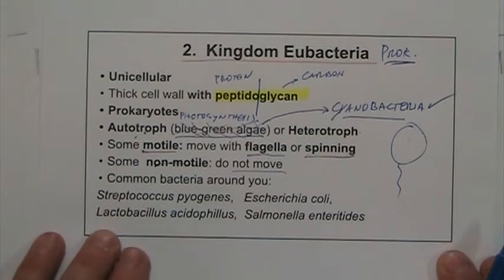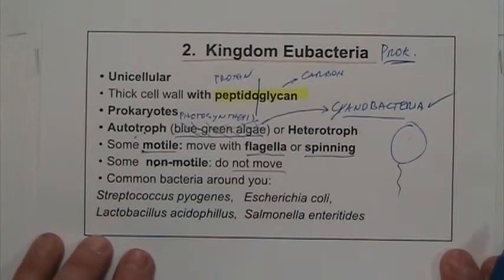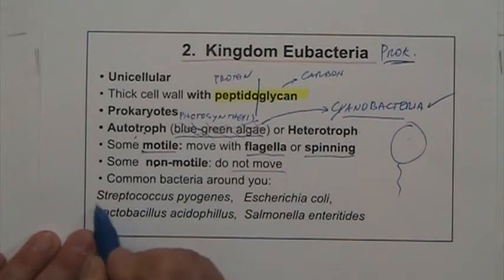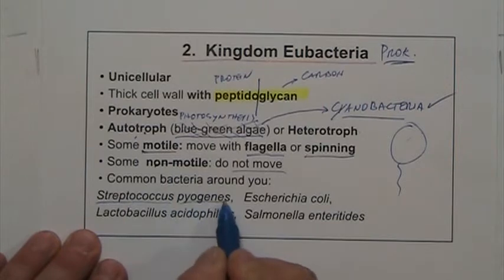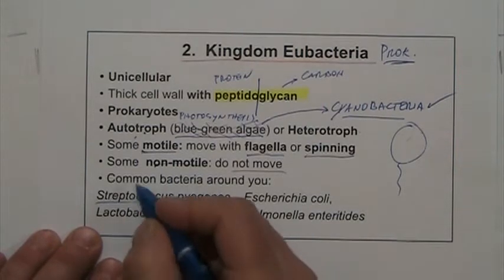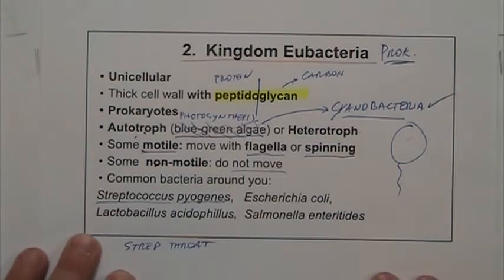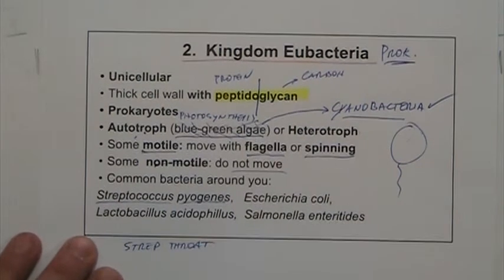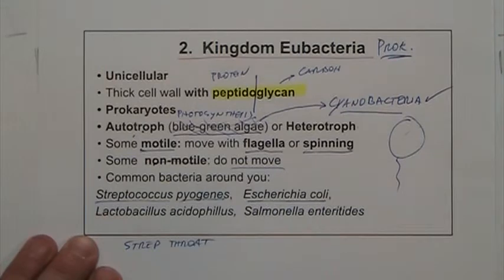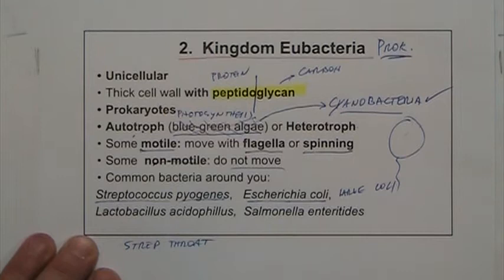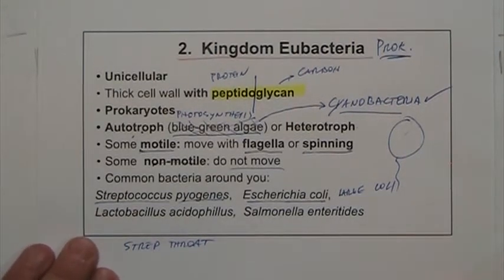Here are some examples of bacteria around us. Streptococcus pyogenes is the one that causes strep throat — very painful. E. coli lives in our large intestine and is very good for us, helping make molecules the body needs, like vitamin K.